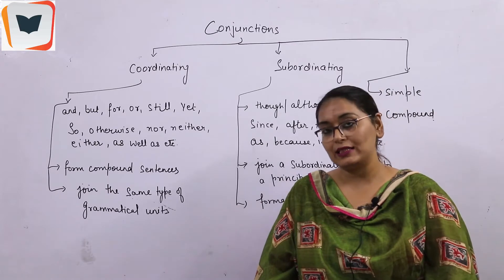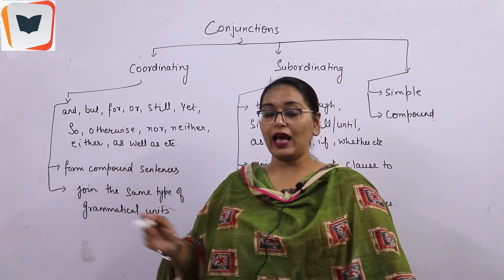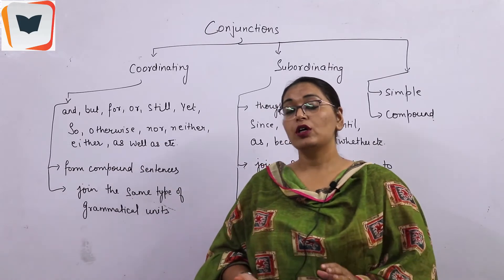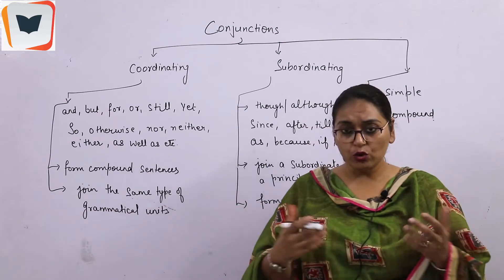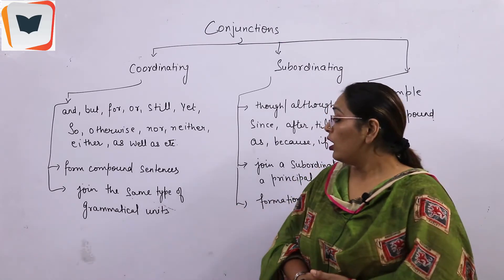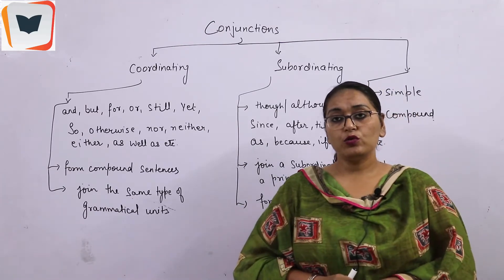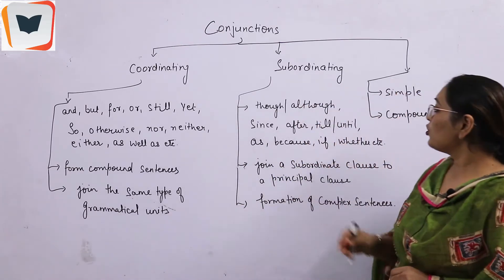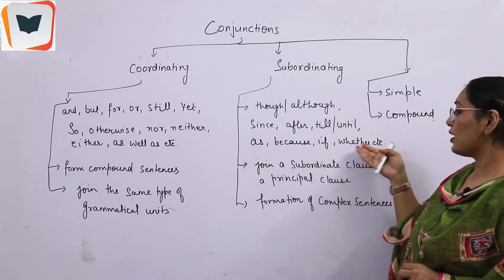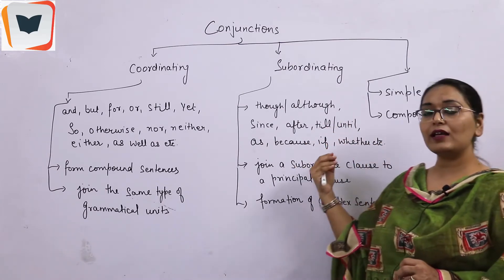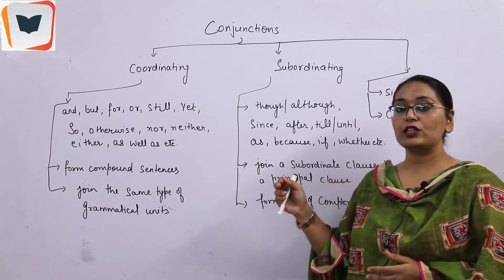For example: 'We met at the station but he failed to recognize me.' So here 'but' is used to show contrast — it sets one action against another. Similarly, 'although', 'since', 'after', 'till', 'until', 'as', 'because', 'if', 'whether', etc. — these are used to join clauses and sentences.